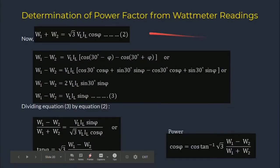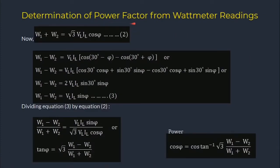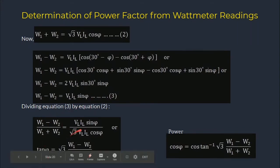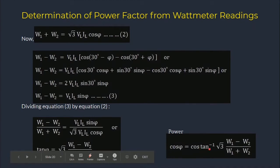To determine the power factor φ: since W1 + W2 = √3·VL·IL·cos(φ) and W1 − W2 = VL·IL·sin(φ), dividing gives tan(φ) = √3·(W1−W2)/(W1+W2). Therefore, power factor cos(φ) = cos[tan⁻¹(√3·(W1−W2)/(W1+W2))]. Here W1−W2 represents reactive power and W1+W2 represents active power.